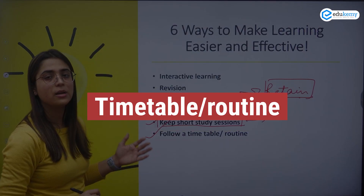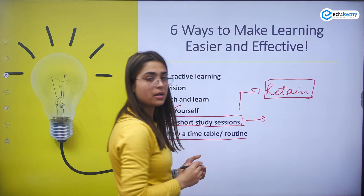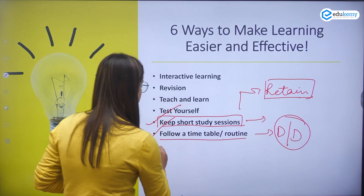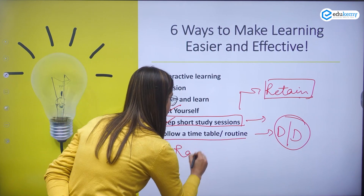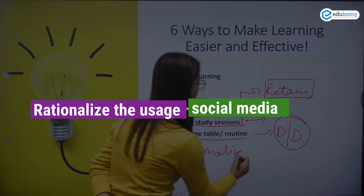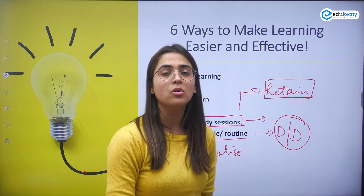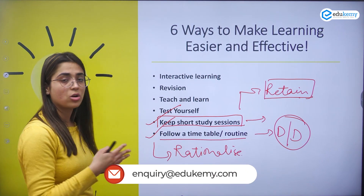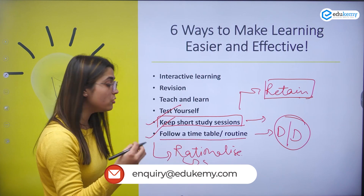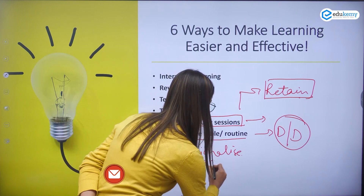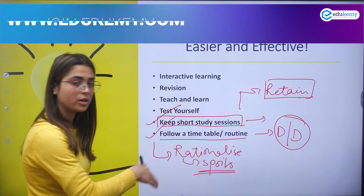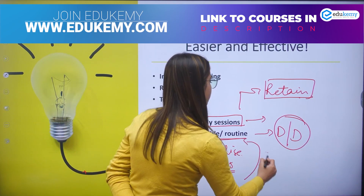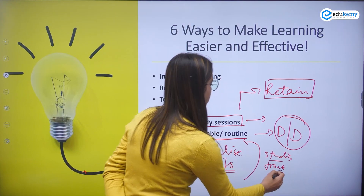The next thing is to follow a timetable and routine. Following a timetable is important because it gives you a sense of direction and makes you more disciplined. You also need to rationalize your usage of internet and social media, because when you don't rationalize it, it spoils your routine. Making a routine and timetable is important so you will be able to track your studies.